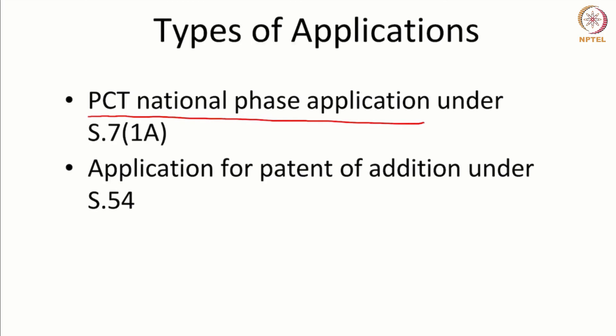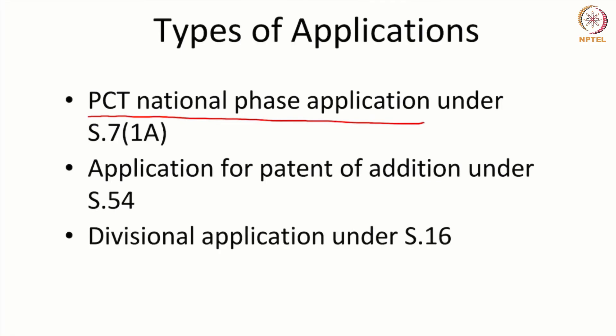The patent of addition will run along with the earlier invention — what we call the main invention — and it will expire along with the main invention. This tells you that a patent of addition is something which runs along with the main invention. Because you came up with improvements and modifications at a later point in time, the law allows you to club them together with the main invention. That is the fifth type of application you can file.